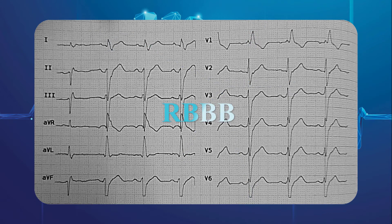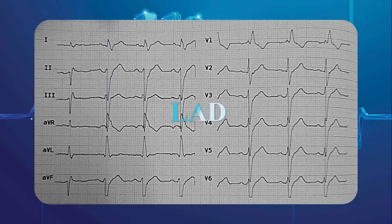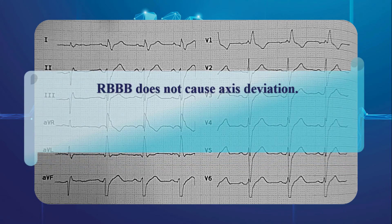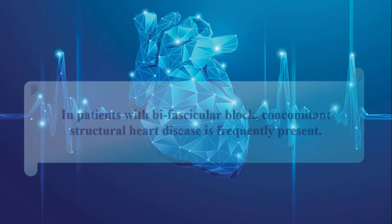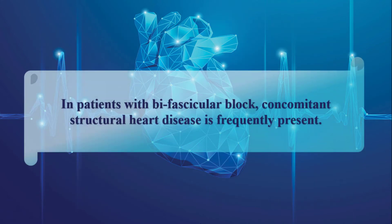Furthermore, QRS complexes are positive in D1 and negative in D2, so left-axis deviation is present as well. Remember that RBBB does not cause axis deviation. Therefore, RBBB with left or right-axis deviation is due to bifascicular block. In patients with bifascicular block, concomitant structural heart disease is frequently present. So careful screening for signs and symptoms of occult cardiac disease is essential.